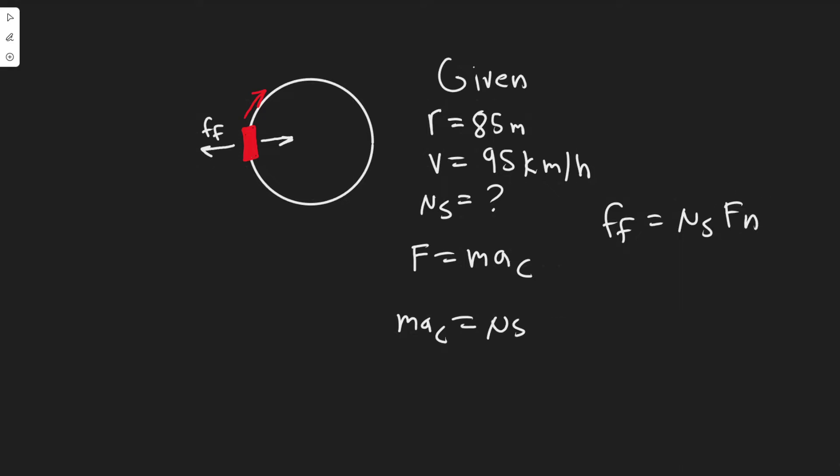These two values have to be equal to each other in order for it not to slide. When it says how large must this value be, this value has to be large enough such that it equals its mass times its centripetal acceleration, or else it wouldn't be able to round the curve. Basically we need to solve for μₛ given this equation.